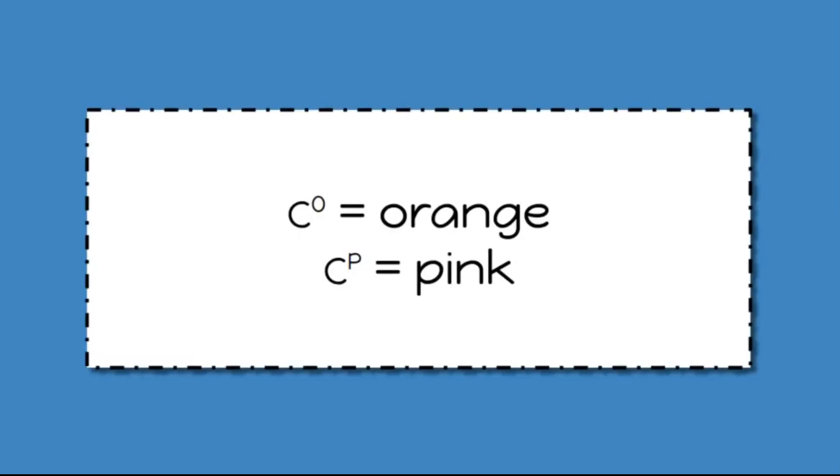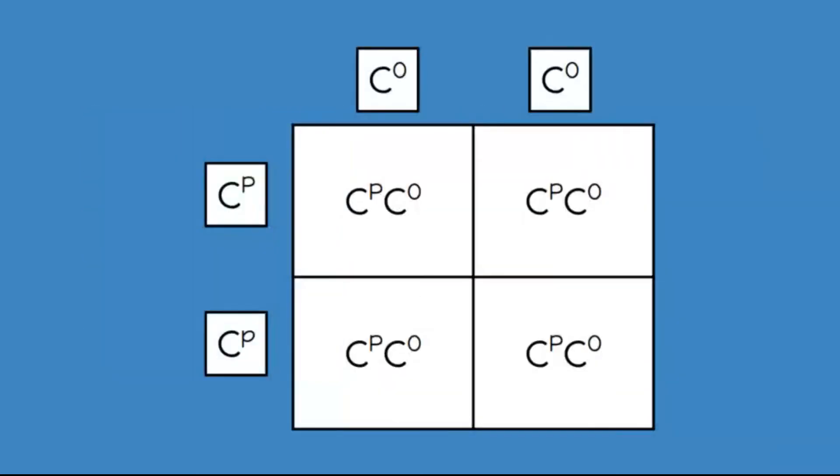Looking at a Punnett square for this situation, we would have C mean color. So C with a superscript of O would be orange, and C with a superscript of P would be pink. So if we had an orange parent, C-O-C-O, and a pink parent, C-P-C-P...